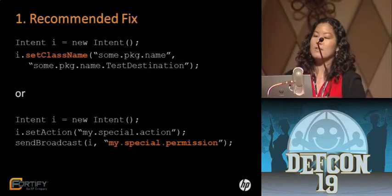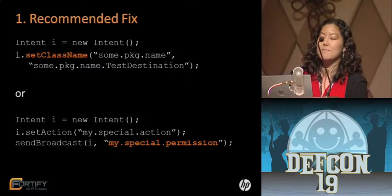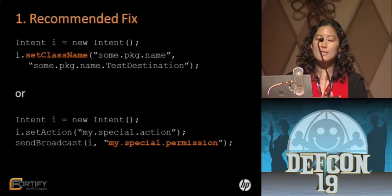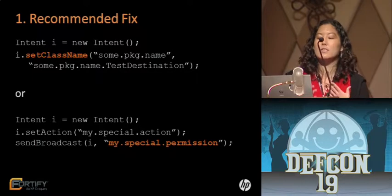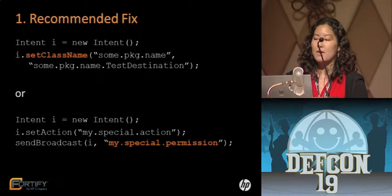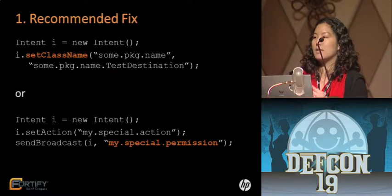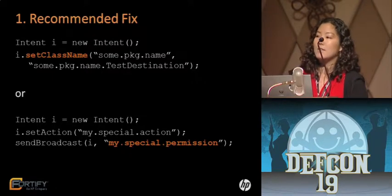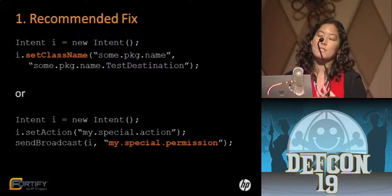Our recommended fix for this problem is to use explicit intents whenever possible — set the class name. If you're using a broadcast and want it to go to multiple recipients, consider adding permissions to that request, requiring that recipients have a permission. In any case, don't unnecessarily expose data in that intent. If you're only communicating within an application, you don't need it to go out to the system — you know the recipient component's names.